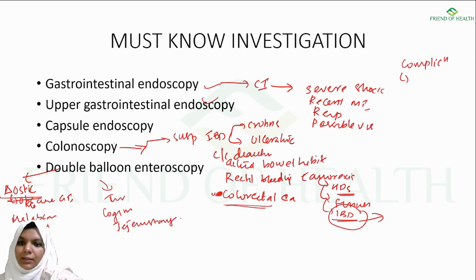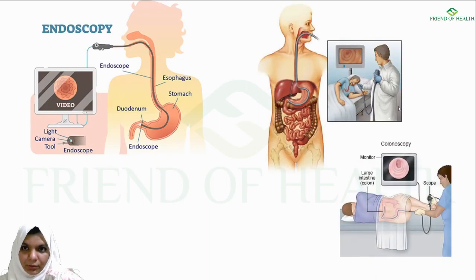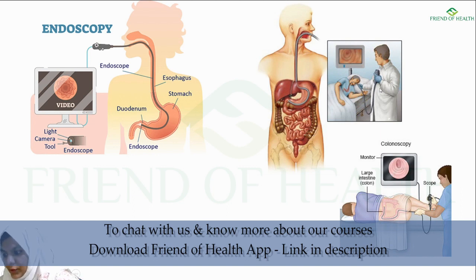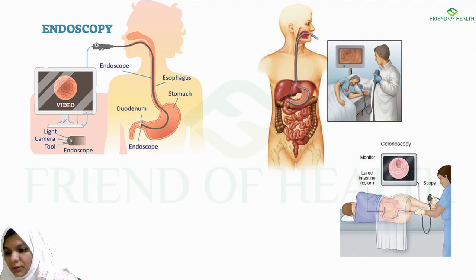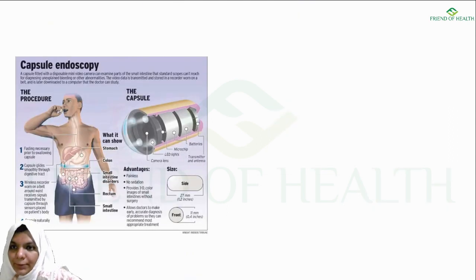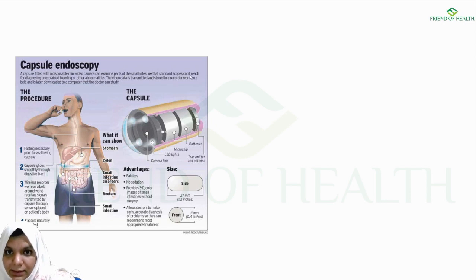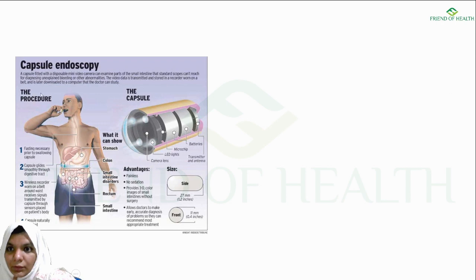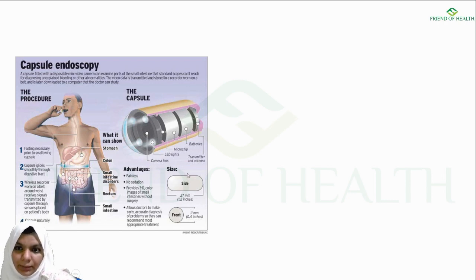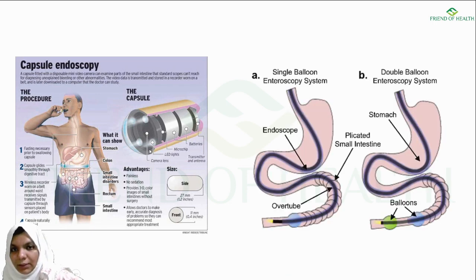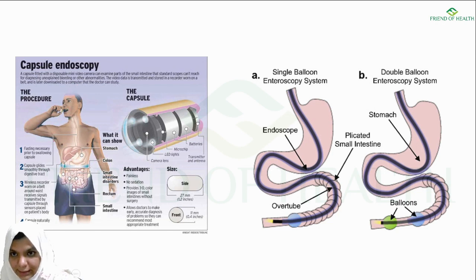To summarize the important GI investigations: upper endoscopy is also known as esophagogastroduodenoscopy. Capsule endoscopy involves a disposable mini video camera in a swallowable capsule that can examine parts of the small intestine that standard scopes cannot reach. Video data is transmitted and stored on a belt recorder for the doctor to review later. Indications include obscure GI bleeding, small bowel Crohn's disease, and assessment of celiac disease.